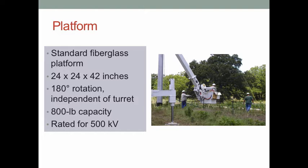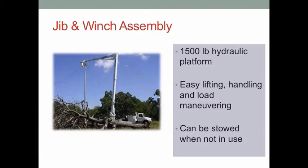The 1,500-pound hydraulic platform jib and heavy-duty winch can rotate up to 180 degrees, either with the platform or independently for precise load positioning. This facilitates easy lifting, handling, and load maneuvering. The jib and winch can be stowed when not in use to provide more operator and equipment space.